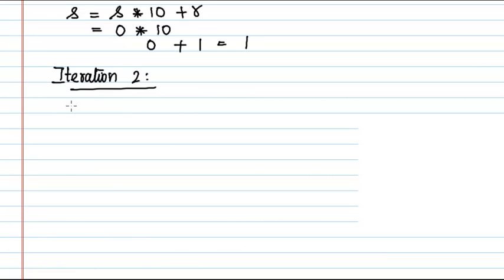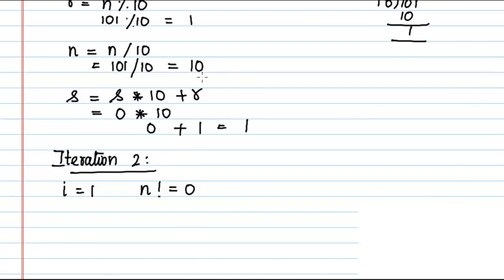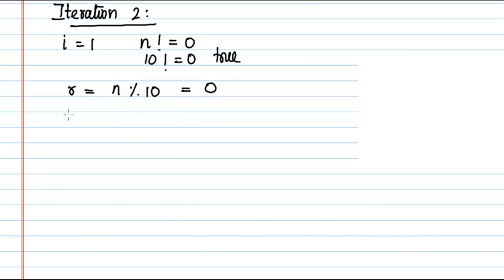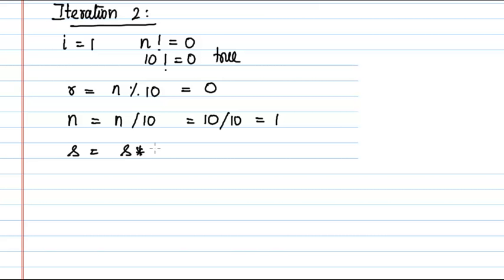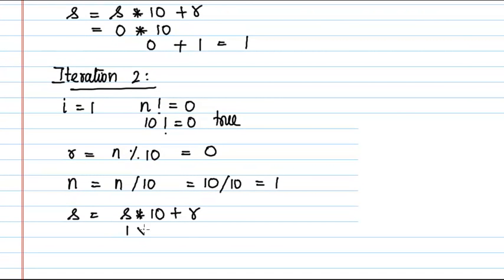Moving to the second iteration, i is incremented to 1. The value of n is 10, which is not equal to zero, so the condition is true and the loop executes. Here r is equal to n modulo 10 — the remainder when 10 is divided by 10 is zero, so r equals 0. Then n becomes 10 divided by 10, which is 1. Then s is equal to s into 10 plus r — the value of s from the previous iteration is 1, so 1 times 10 plus 0 gives s equals 10.